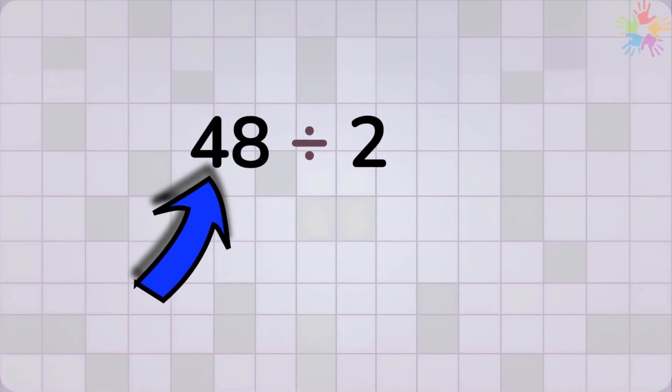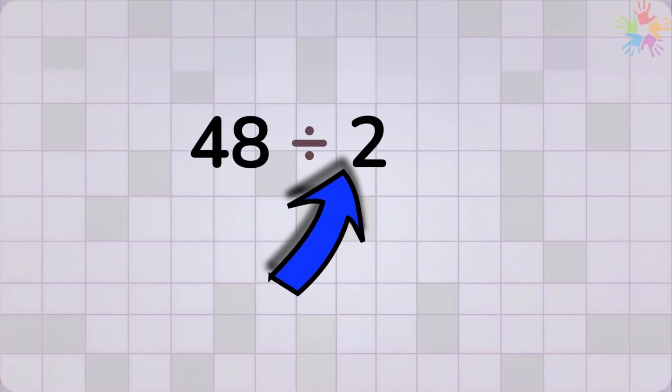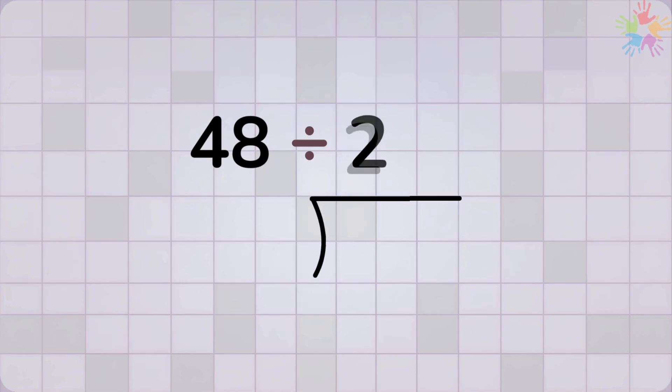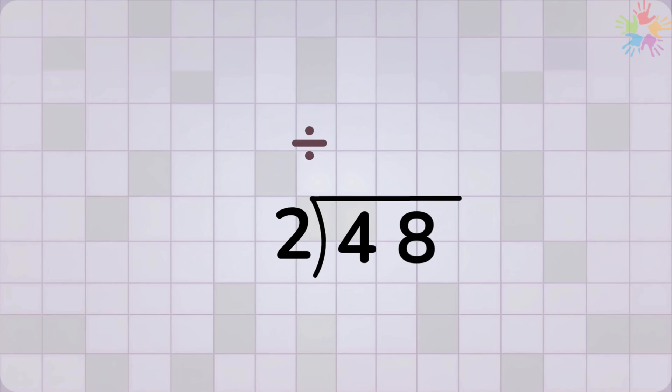We want to divide 48 by 2. So as always, we place the number 2 outside the division box and the number 48 inside. Now we begin with the first digit, which is 4.